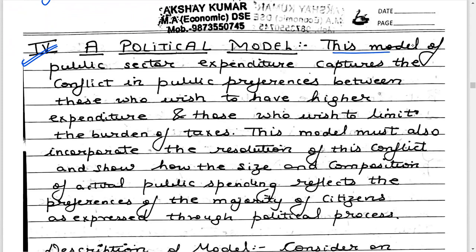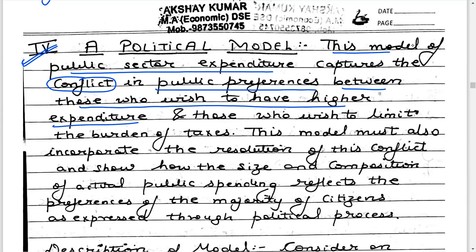This model of public sector expenditure captures the conflict that arises in public preferences between those who wish to have higher expenditure and those who wish to limit the burden of taxes. If you require higher public expenditure, you need to pay higher taxes — it cannot be the case that you have higher public expenditure while paying lower taxes.